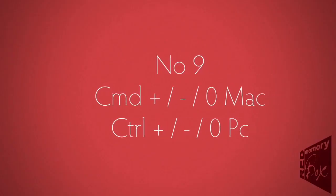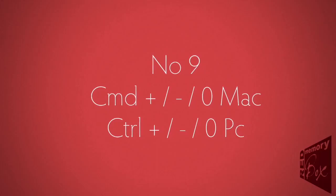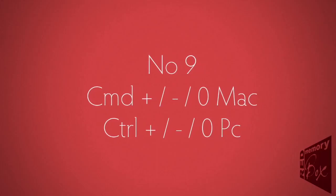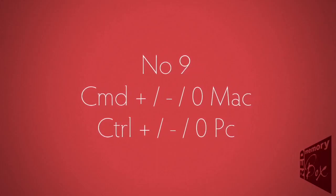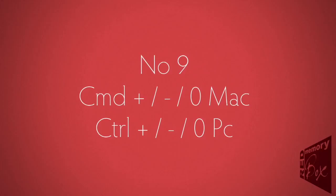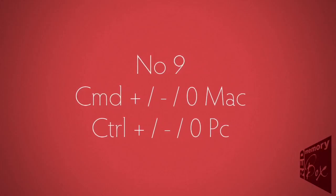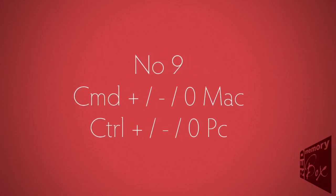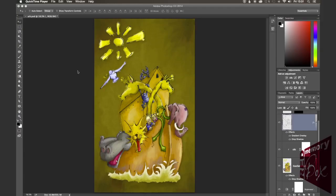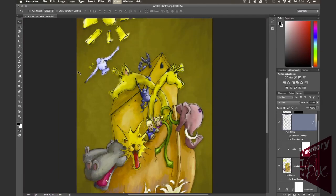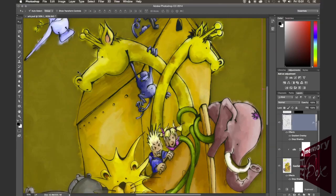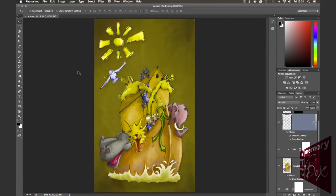Tip number nine, we are nearly at the end. Command+Plus, Command+Minus, or Command+Zero on the Mac — or Control+Plus, Control+Minus, or Control+Zero on the PC. These are your zoom in, zoom out, and fit to screen shortcuts for Mac or PC.